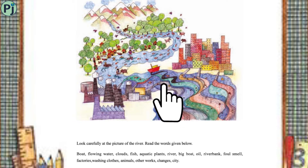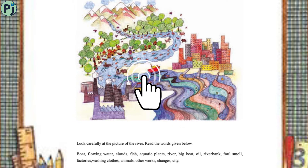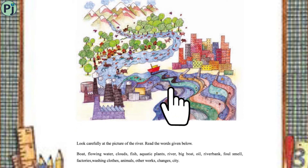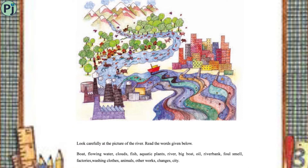Here on the first page, one picture is given for you. You will have to observe it, and then using the words given, you will have to make one story about the river. Here you have a river picture.